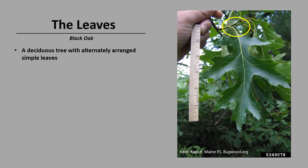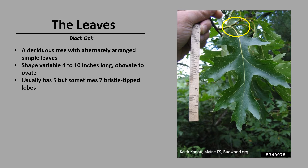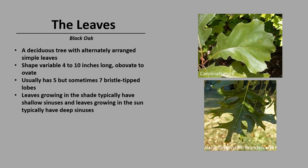Black oak is a deciduous tree with alternately arranged simple leaves, as you can see in the photo. The leaves are typically 4 to 10 inches long, obovate or ovate in shape, and usually have 5 but sometimes 7 bristle-tipped lobes. Leaves growing in the shade typically have shallow sinuses, like the leaf at the top, and leaves growing in the sun typically have deep sinuses — those are the indentations — like the leaf on the bottom.